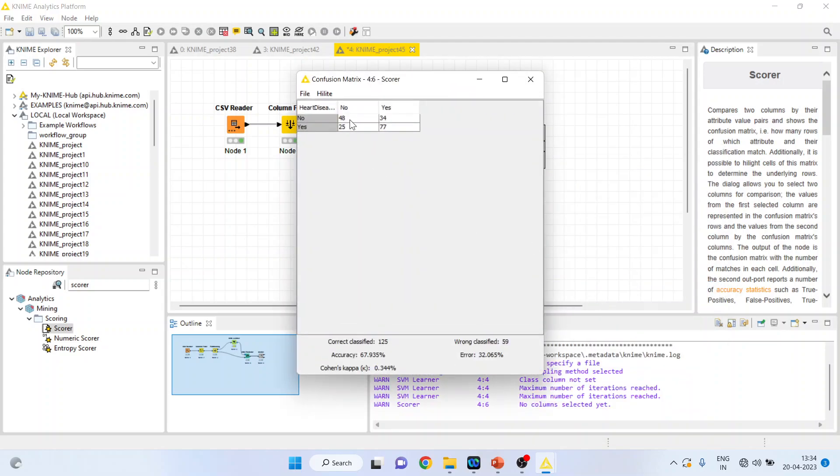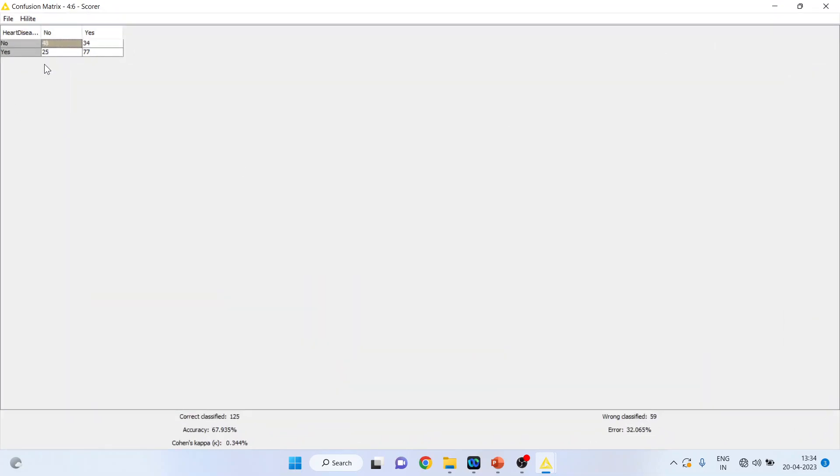You can see here 48 cases are such where the person does not have a heart disease and the algorithm also predicted correctly. 77 are such cases in which the person is having a heart disease and the algorithm also predicted correctly. For 48 plus 77, 125 are correctly classified cases and the classification accuracy is 67%, which is considered to be not very good.